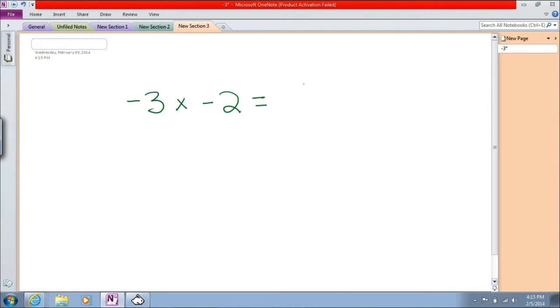What it depends on is the operation you're using. So if you're multiplying, that is the case. For example, if we had negative three times negative two, and I'm putting this up on my computer just so you have a visual. When we're multiplying, two negatives always give us a positive number.